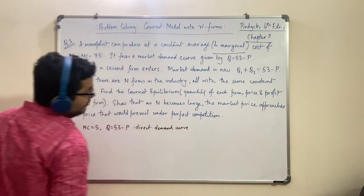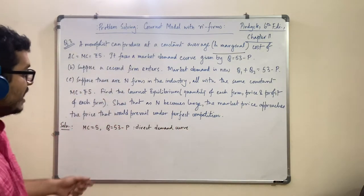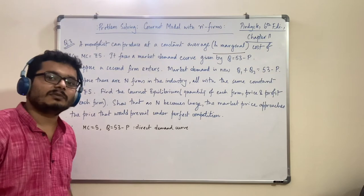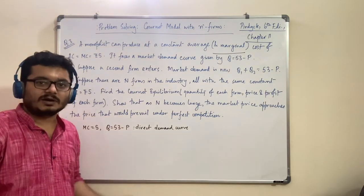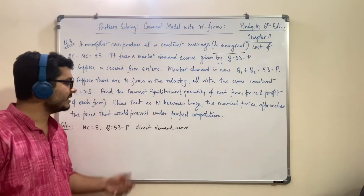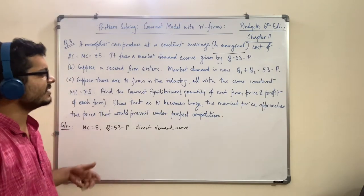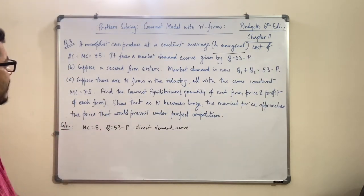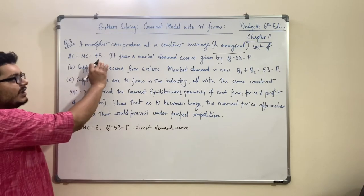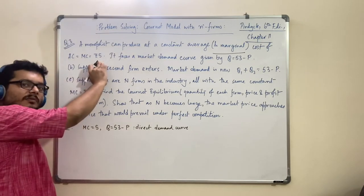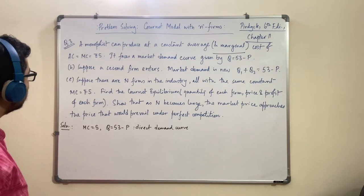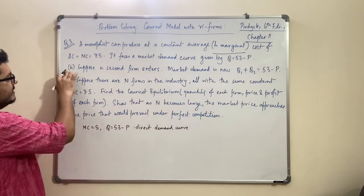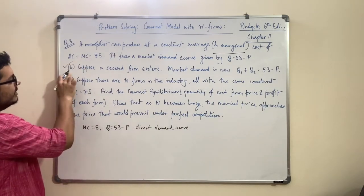So even before we start solving the problem, we must convert this into an inverse demand function. If you work with it directly you will run into trouble. The problem then asks you to solve for monopoly in section A. In section B it changes to oligopoly — suppose a second firm enters. Market demand is now Q1 + Q2 = 53 minus P. We can write this under Cournot, because by this time we know that if a second firm is entering, the decision variable is quantity, so we are talking about the Cournot model.